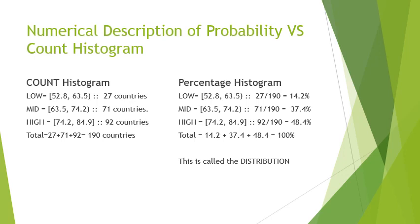Looking at the three bins in numbers: the first bin has 27 countries, the mid-range bin has 71 countries, and the high range — from 74 to 85 — has 92 countries. The percentage histogram shows the ratio of each bin to the total. The low bin is 27 divided by 190, which is 14.2 percent. The mid bin is 71 over 190, which is 37.4 percent, and the high bin has 48.4 percent.